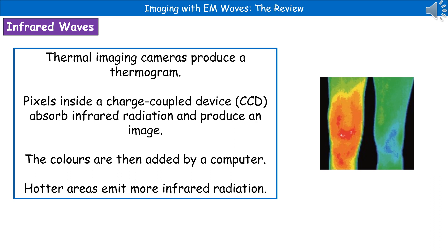The first method uses infrared waves. We can use a device called a thermal imaging camera, which produces a picture called a thermogram. Thermograms have different colours based on how much infrared radiation is being emitted.